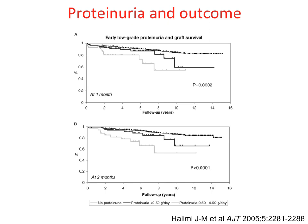Regarding proteinuria — this French study looks at proteinuria at one month and three months, dividing patients into those with no proteinuria, a little proteinuria, and heavier proteinuria. Even at one month, this measure separates patients: those with no proteinuria have better graft survival than those with higher levels. The separation is slightly better by three months.